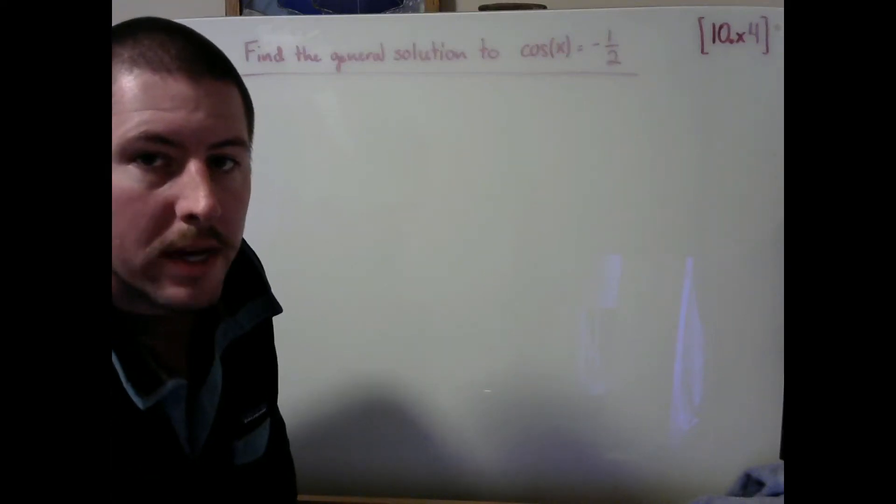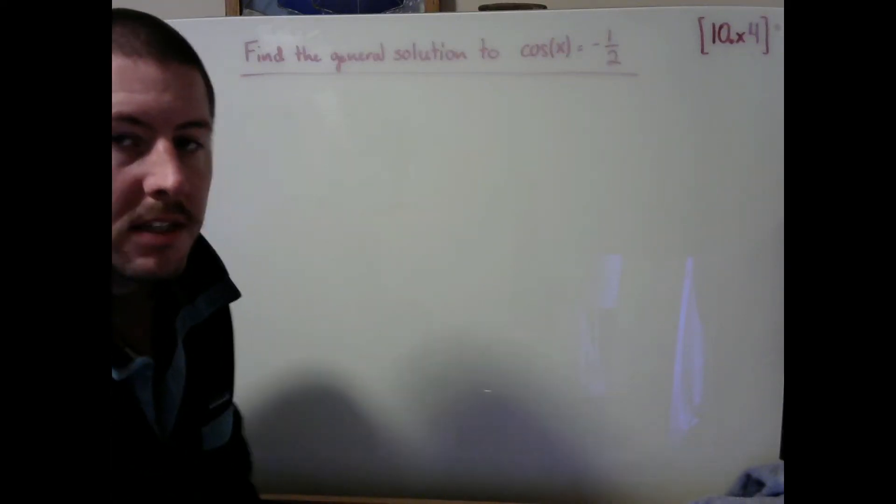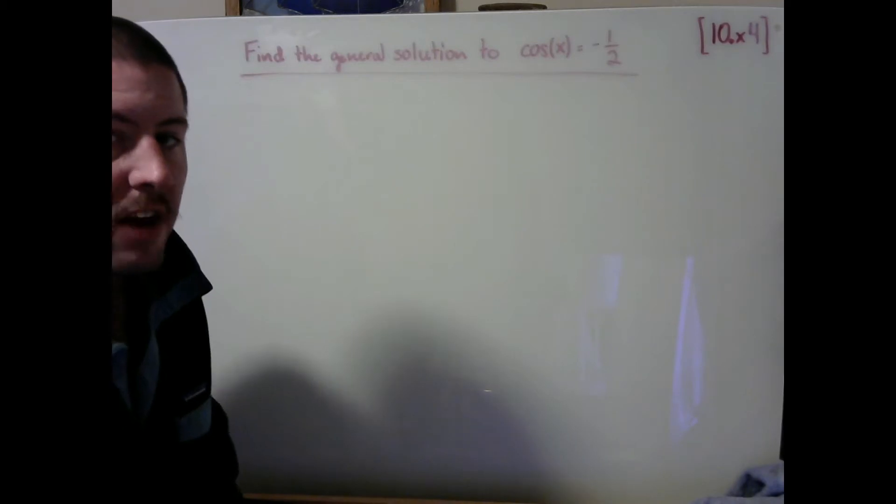Let's go ahead and take a look at week 10 example 4. In this example we're looking to identify the general solution to the equation cosine of x equals negative 1 half.